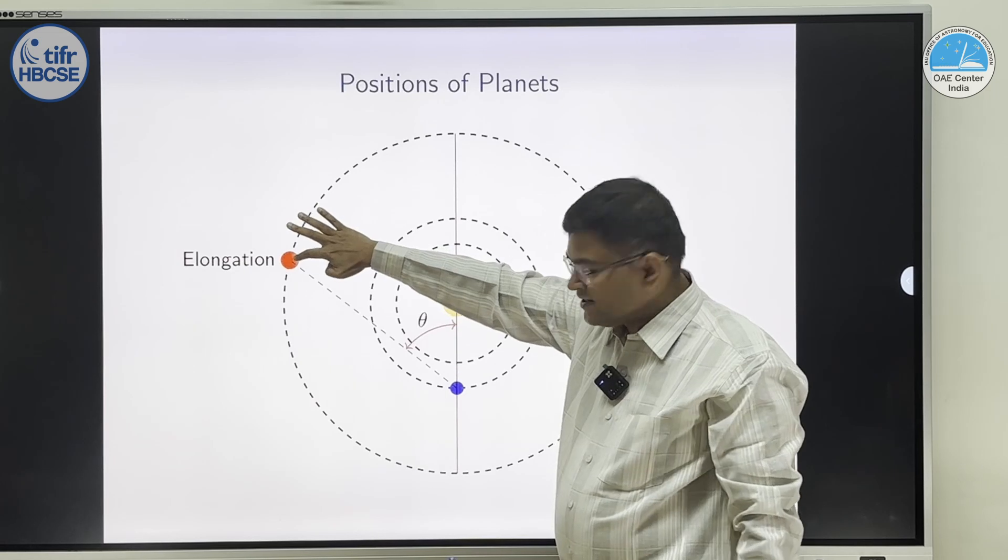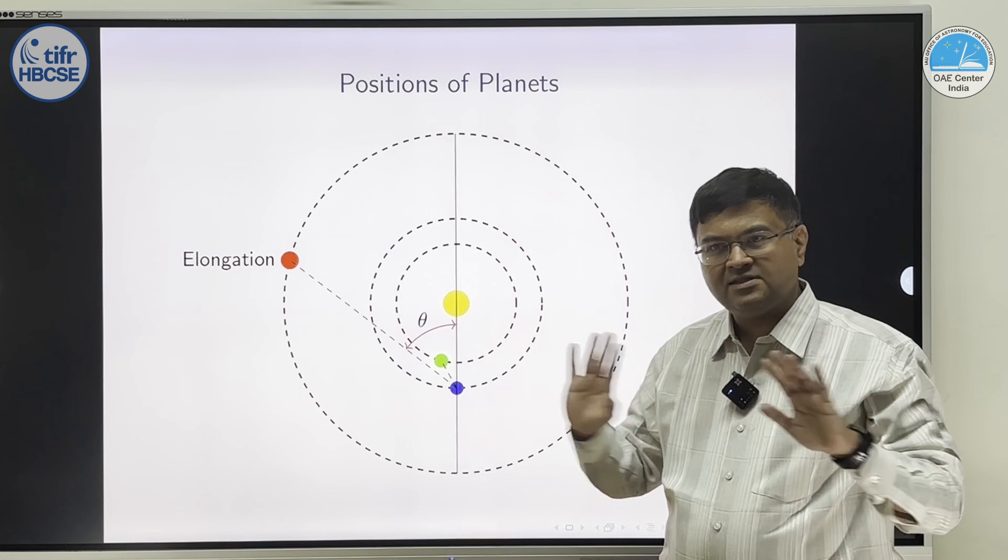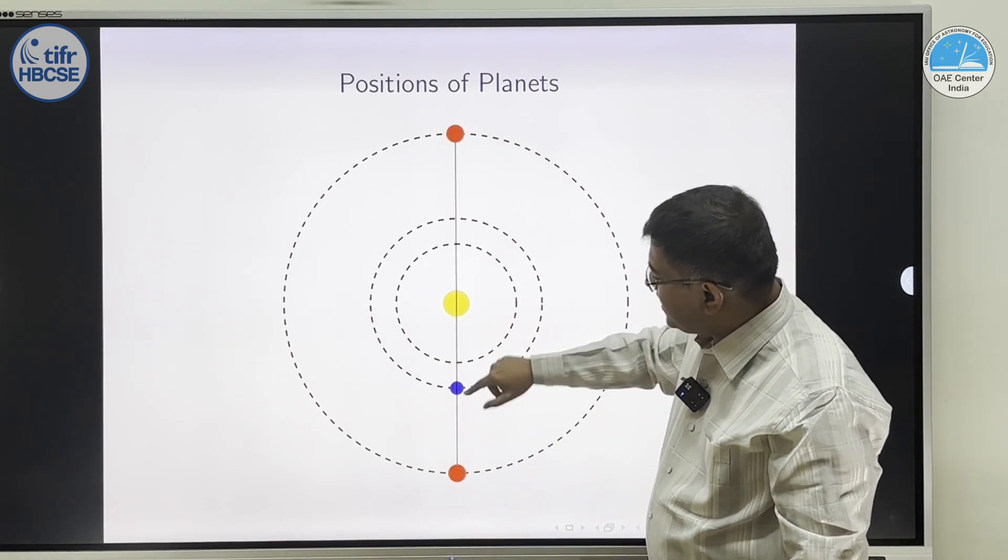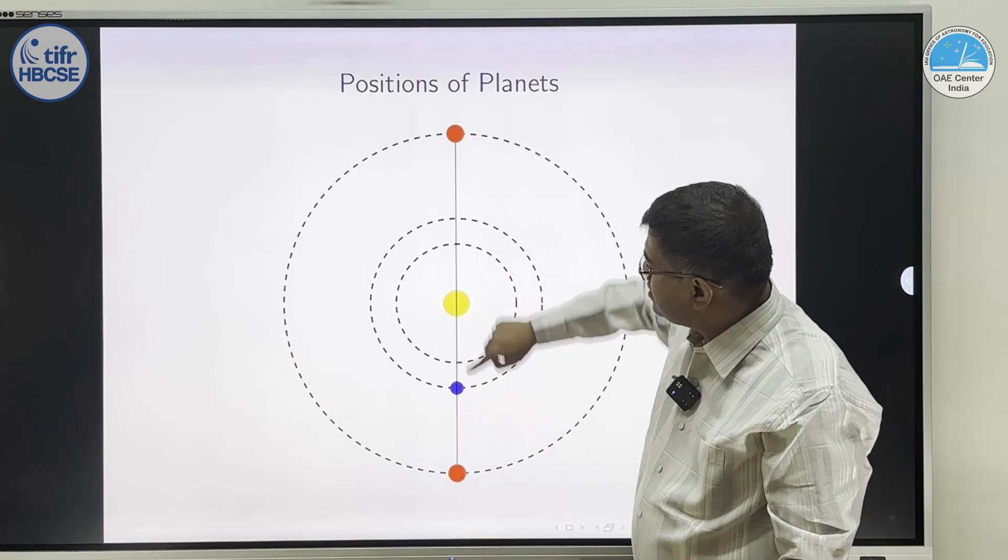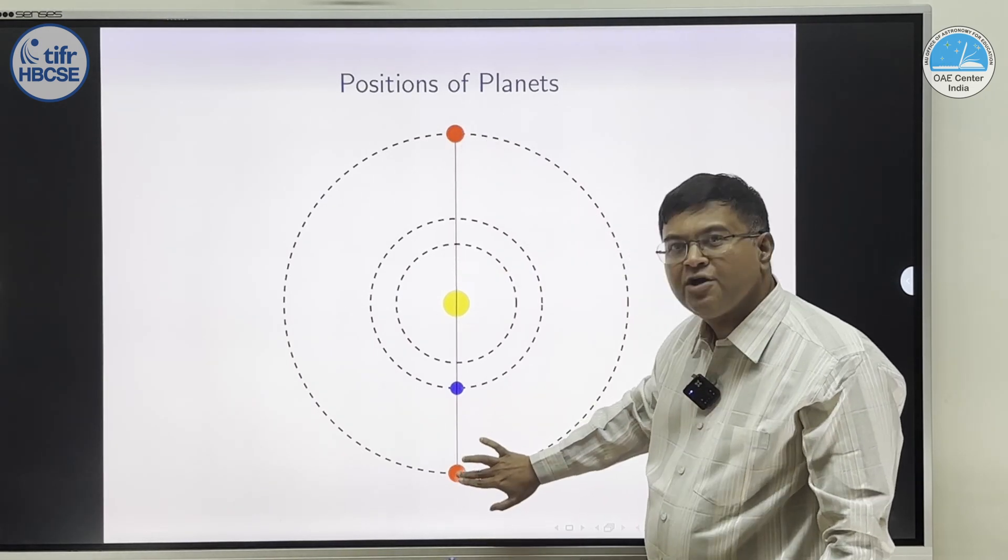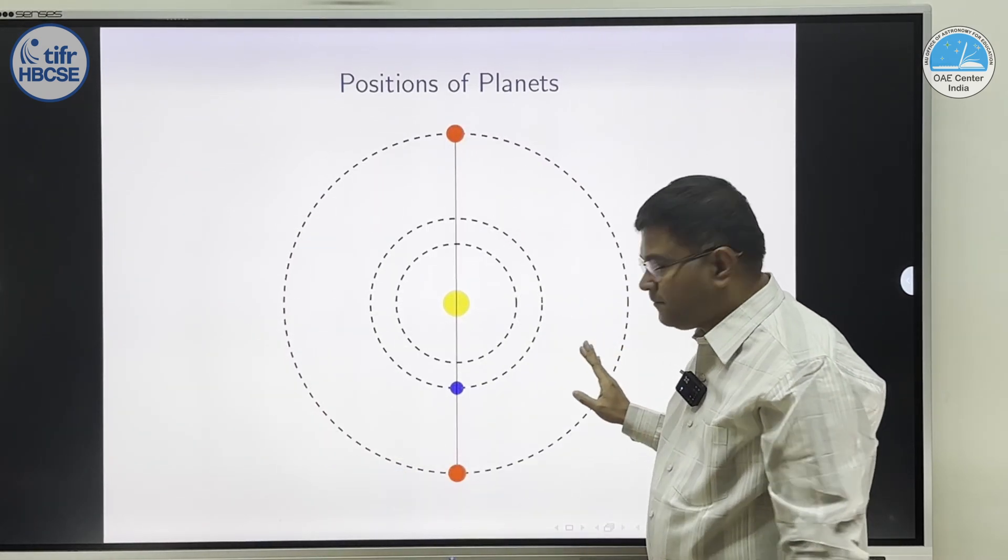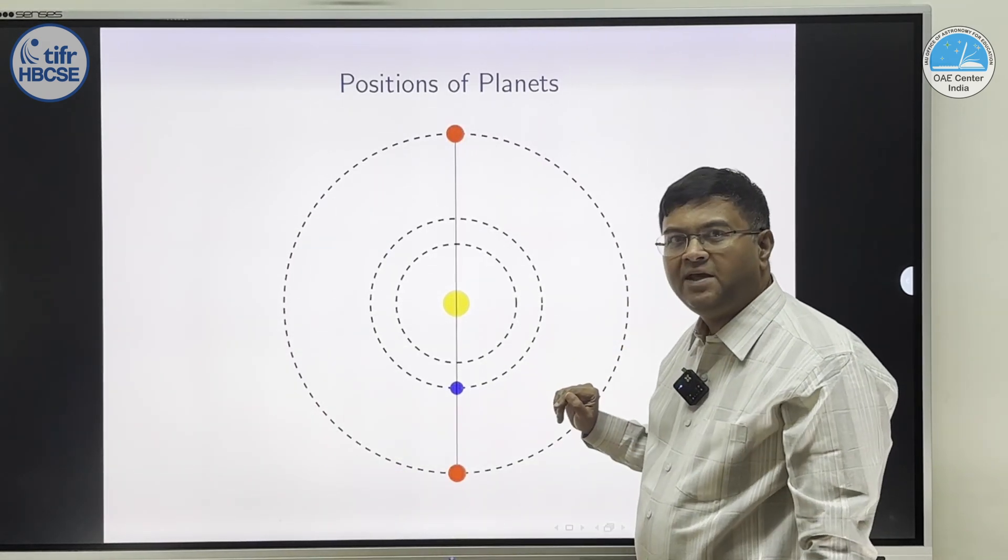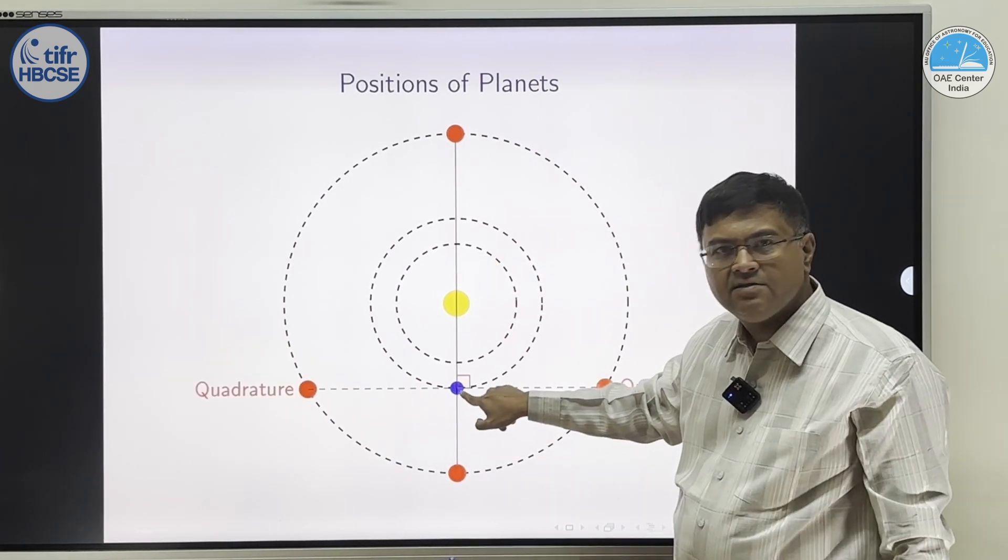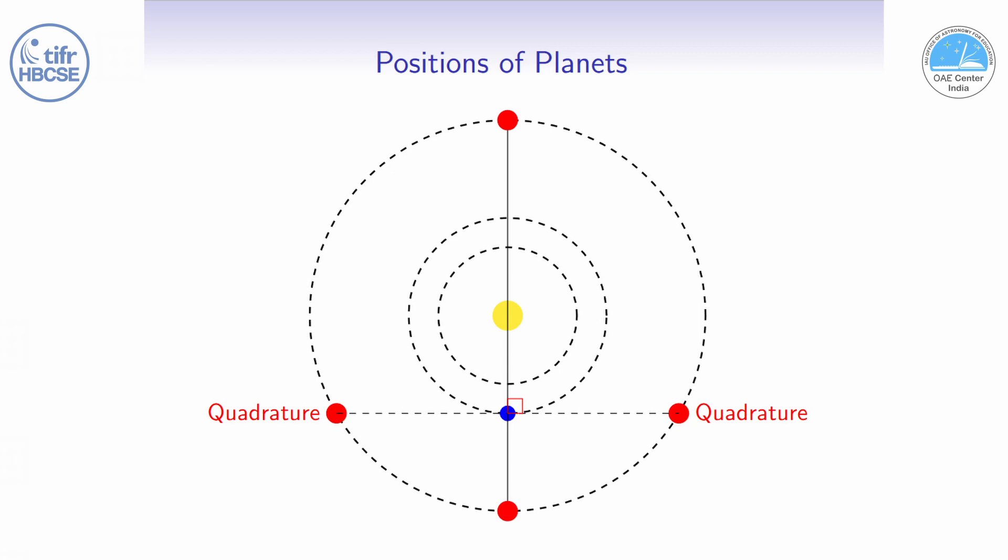We can define it for the outer planets. We can also define it for the inner planet. Elongation is a general term. Now, as you can imagine, if you take this position, elongation of the outer planet is zero. If you take this position, elongation of the outer planet is 180. And, you can take all values in between them. Special case would be, when elongation is 90. So, angle at Earth is exactly 90. It can be at this side, or it can be at this side. We call that quadrature.